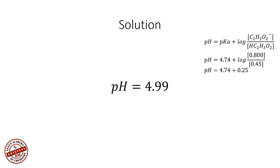Now into this solution we are going to add 0.02 moles of sodium hydroxide. We want to calculate the new pH and find the difference between 4.99 and the new value — that difference is called the shift in pH.